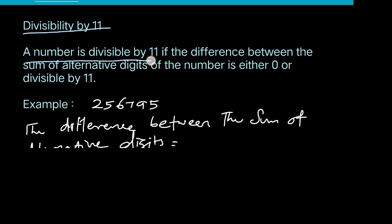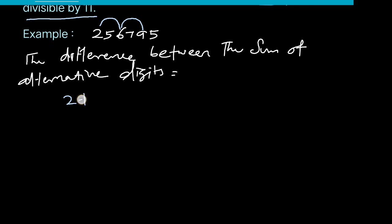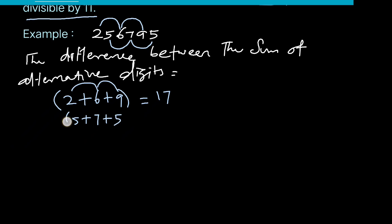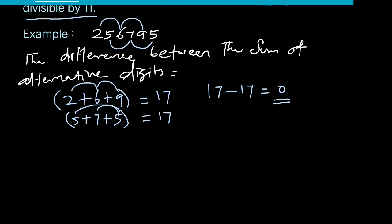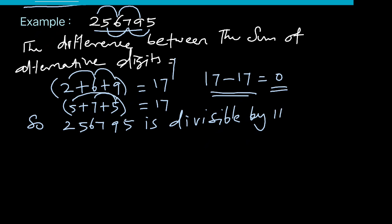Divisibility by 11: a number is divisible by 11 if the difference between the sum of its alternative digits is either 0 or divisible by 11. For example, a number with alternating digit sums — sum of odd-position digits: 2 plus 6 plus 9 equals 17; sum of even-position digits: 5 plus 7 equals 12. Difference: 17 minus 17 equals 0. So the difference is 0, meaning the number is divisible by 11. That is all.